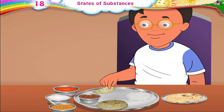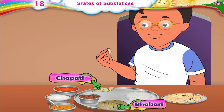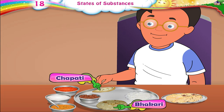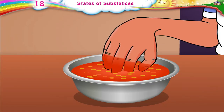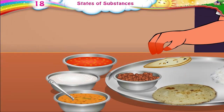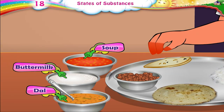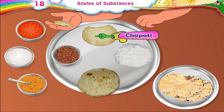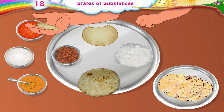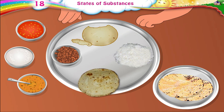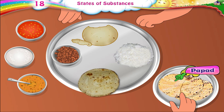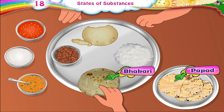While eating, you can pick up a piece of bakri or chapati and put it in your mouth. But we cannot pick up things like soup, buttermilk, and dal in the same way. Look at this piece of chapati. It has a definite shape. It will maintain its shape even if it is placed in the plate. Like this papad and this bakri. They will not mix with the other food in your plate.